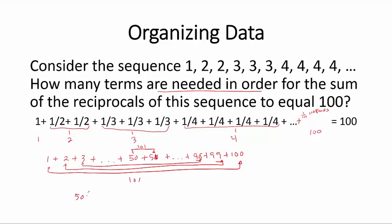So the answer must be 50 times 101, which is 5050. That is the number of terms needed for this sequence to be equal to 100.